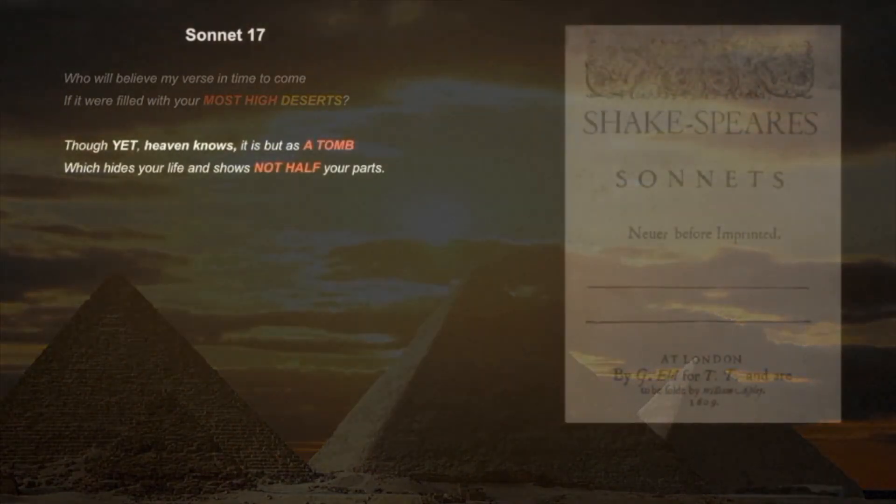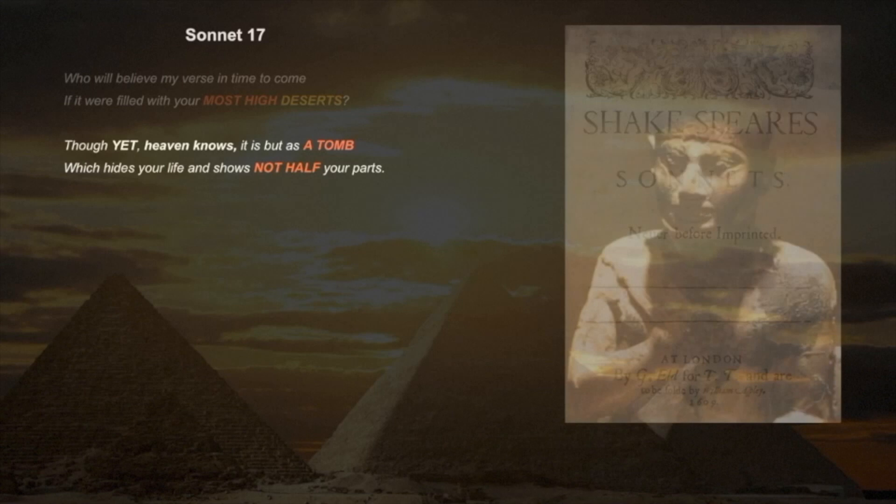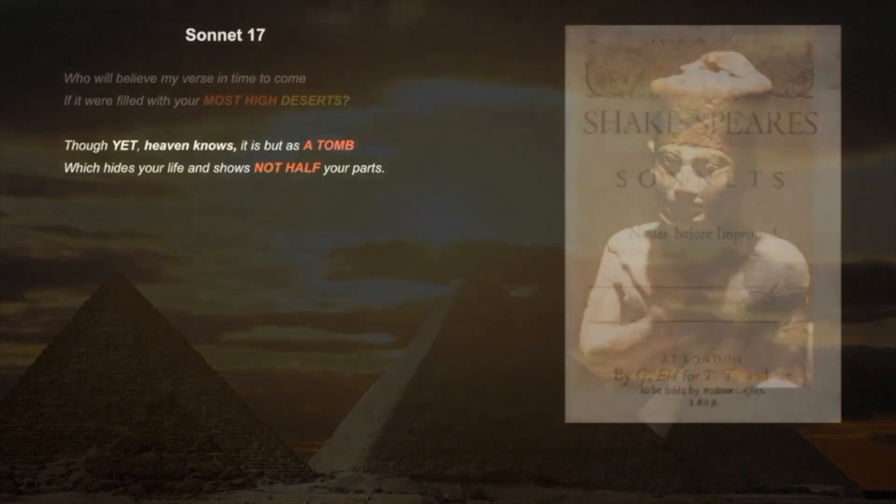It continues: Though yet, heaven knows, it is but as a tomb. The Great Pyramid was thought to be, and still is today by most, a tomb for the pharaoh Khufu. But Shakespeare seems to be hinting that its true purpose is hidden and shows not half of what we assume it to be.